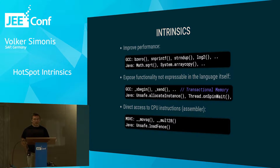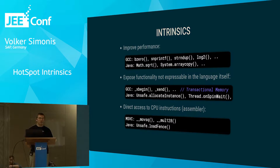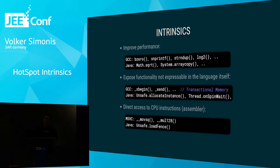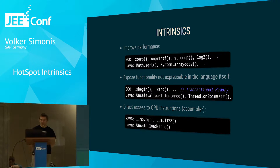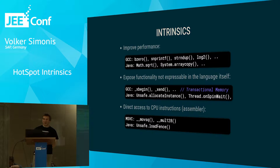Intrinsics also offer direct access to CPU instructions, because CPU vendors often come up with new instructions with every new CPU generation, and compiler optimizations are often not that fast. So compiler vendors give people access to these new instructions through intrinsics. For example, in Java you have unsafe.loadFence, which on weak memory architectures like PowerPC is necessary to place fences — not possible using plain Java, but possible through these functions.